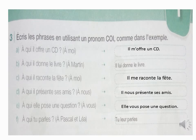Les pronoms C.O.I. sont lui et leur. Ce sont pour les personnes à qui on offre quelque chose. À moi, il m'offre un C.D. À qui il donne le livre ? Il lui donne le livre. À qui il raconte la fête ? À moi. Alors, il me raconte la fête. Toujours, on remarque que le pronom personnel, soit C.O.D. ou C.O.I., sa place est toujours avant le verbe ou avant l'infinitif. La phrase D : à qui il présente ses amis ? À nous. Alors, il nous présente ses amis. À qui elle pose une question ? À vous. Alors, elle vous pose une question. À qui tu parles ? À Pascal et Léa. Tu leur parles.